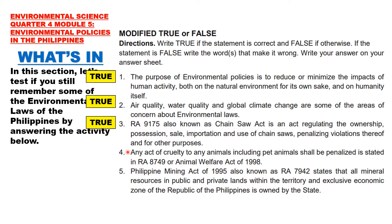Number 4: Any act of cruelty to any animals, including pet animals, shall be penalized, is stated in RA 8749 or the Animal Welfare Act of 1998. Answer: false. The word that made it incorrect is 8749 — it should be 8485.